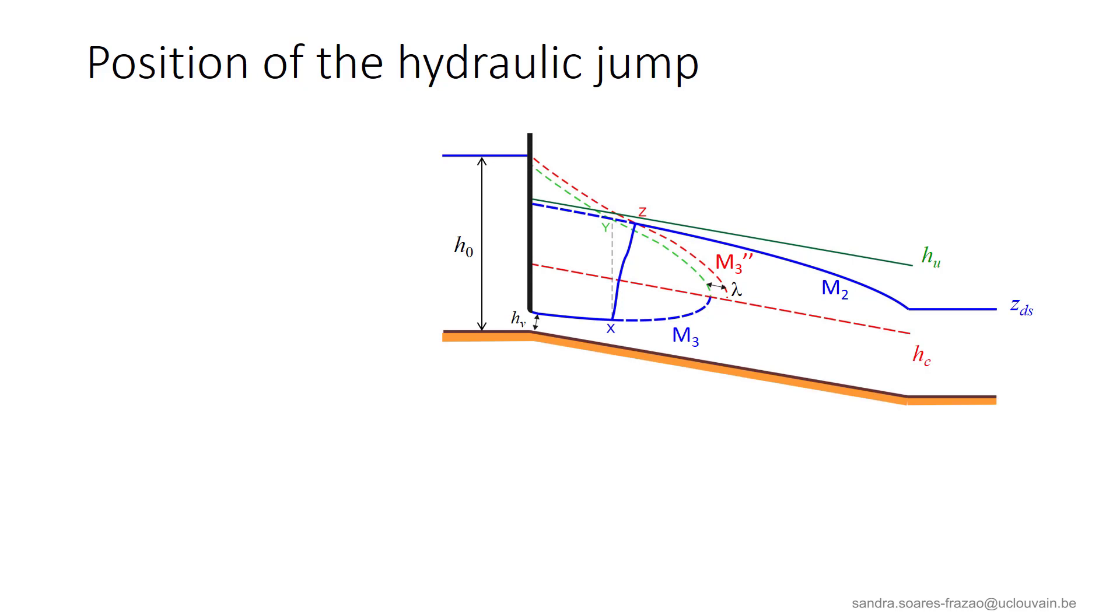And the hydraulic jump can be represented like this, by the x-z line. The final flow profile with the hydraulic jump is as illustrated here. An M3 profile until point x, then the hydraulic jump, then the M2 profile from point z to the downstream end of the channel.